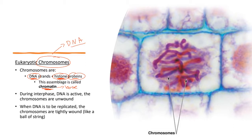However, when the cell is about to go through cell division and it's going to divide, what happens to this chromatin is it becomes way, way more dense. It densens up — it becomes very condensed. And that is what we call a chromosome. So technically a chromosome is just a more dense, more compacted type of chromatin.